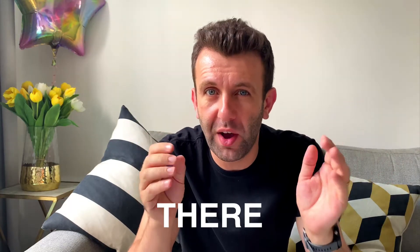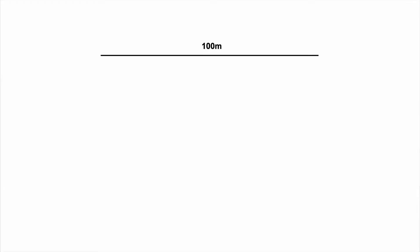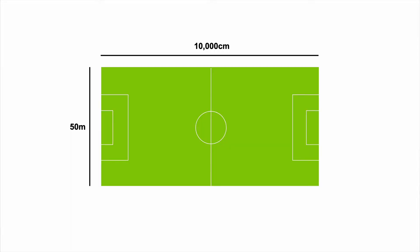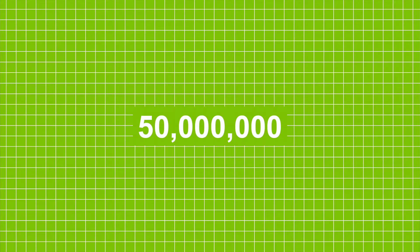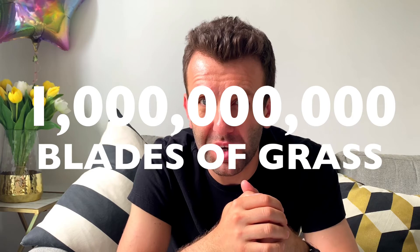How many blades of grass are there on a football or soccer field? Here we need to understand two things: the size of a football field and the amount of space a blade of grass takes up. A football field is roughly 100 meters long and about 50 meters wide. For a blade of grass, let's estimate roughly a centimeter squared, with about 20 blades of grass fitting in there. Converting the field to centimeters: 10,000 cm by 5,000 cm gives us 50 million square centimeters. Multiply by 20 blades per square centimeter and there you have it — one billion blades of grass on a football field.